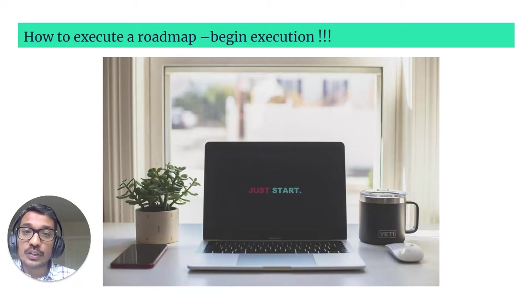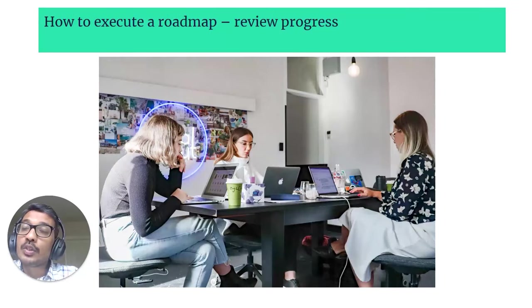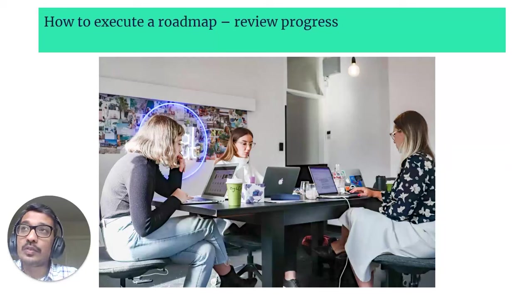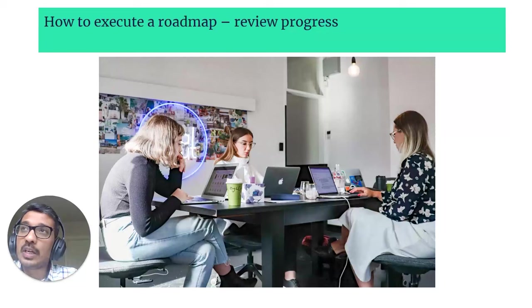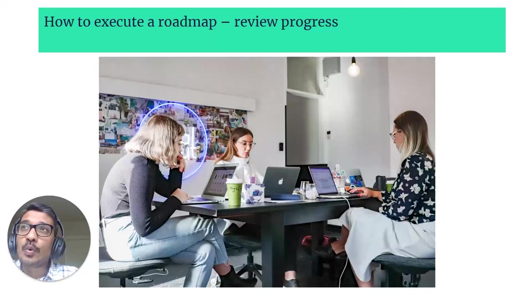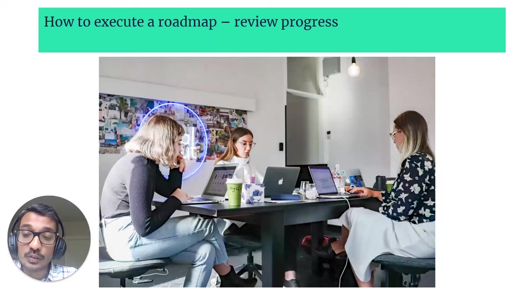Once you begin execution, the second important step is to review execution on an ongoing basis. Review the progress of software being developed — attend sprint demos, access the product and play around with it, or present it to stakeholders. These are mechanisms to review the progress of the software being developed. Give inputs to the team based on what you see so the team can take corrective actions early.